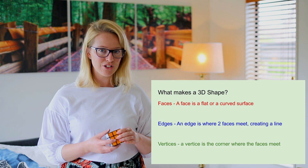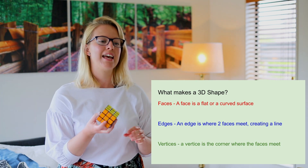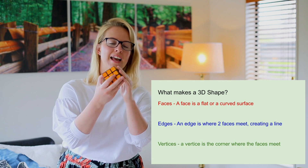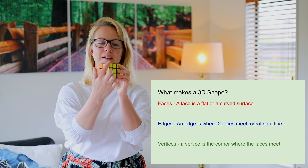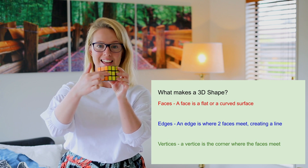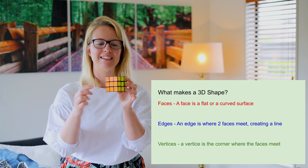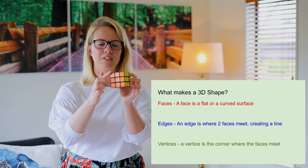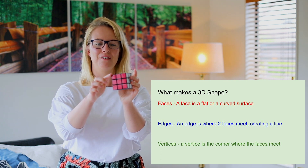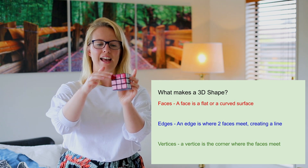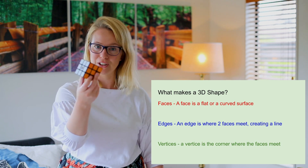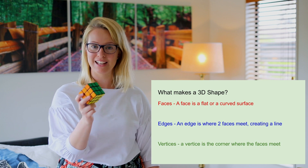An edge on a 3D shape is where two of the faces meet. You can see the orange face and the yellow face are meeting together right here on this line, which is the edge. So let's count how many edges this has: one, two, three, four, five, six, seven, eight, nine, ten, eleven, twelve. So a cube has 12 edges.